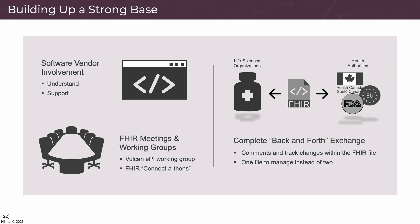One thing the FHIR working groups want to achieve is complete back-and-forth with a FHIR file — something that can't be done with the SPL standard. This would mean that comments and track changes would be exchanged with the regulator — the FDA, Health Canada, EMA, etc. — in the same way they currently are using a Word document. So instead of managing two files — one in Word and one in XML — with FHIR you'd only need to manage one, because you'll always be working in the FHIR file. A contribution i4i made is about how comments and track changes should be handled within the FHIR EPI framework, and our ideas are being considered for the next version of the implementation guide.